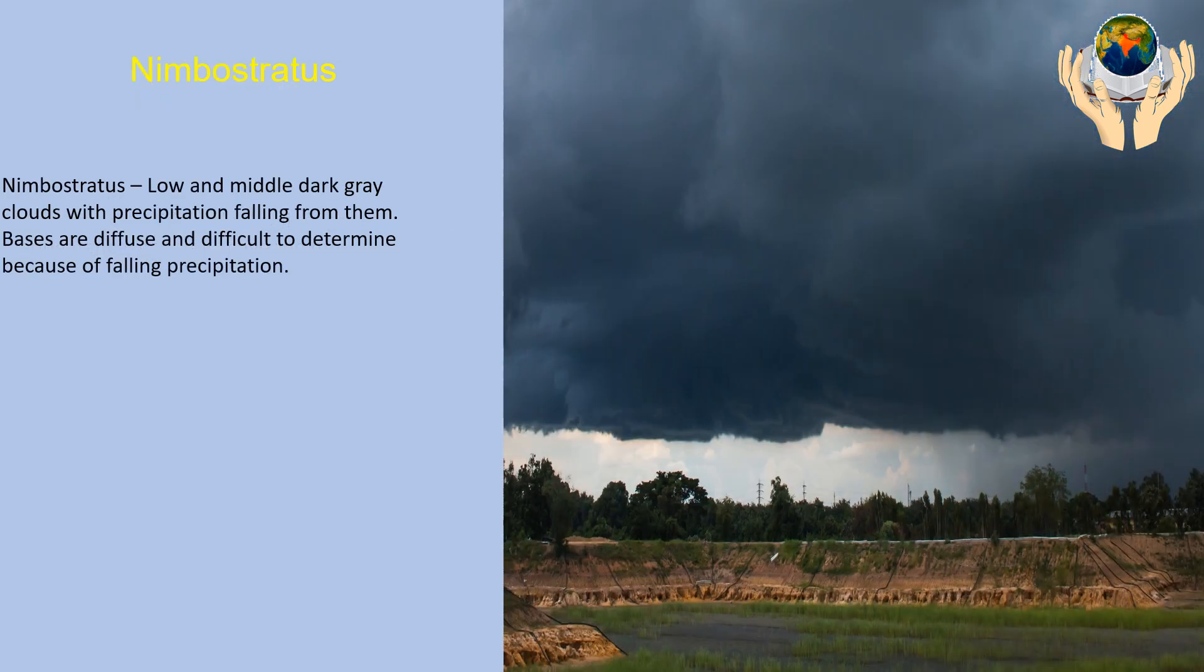Nimbostratus. Nimbostratus is low and middle dark gray clouds with precipitation falling from them. Bases are diffuse and difficult to determine because of falling precipitation.